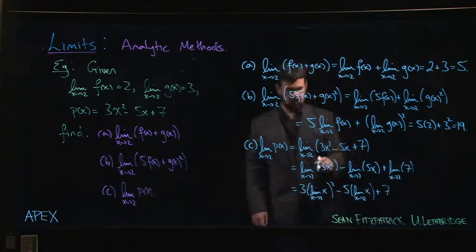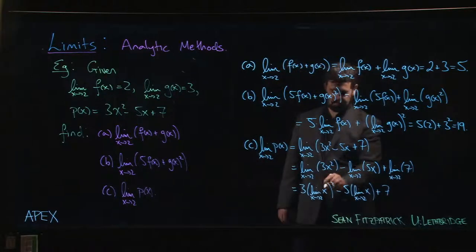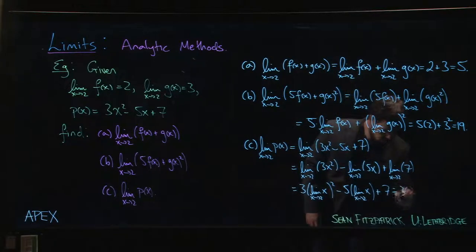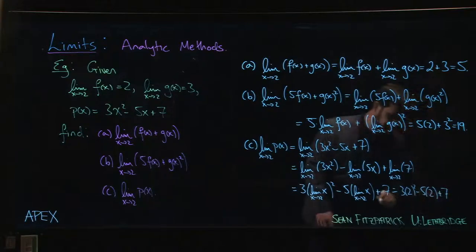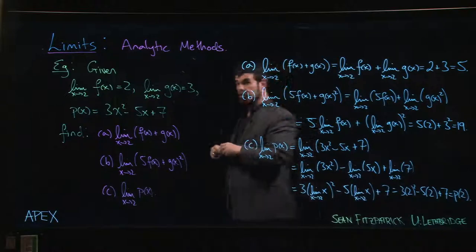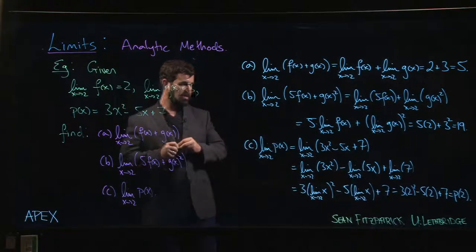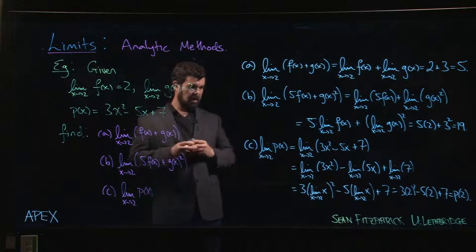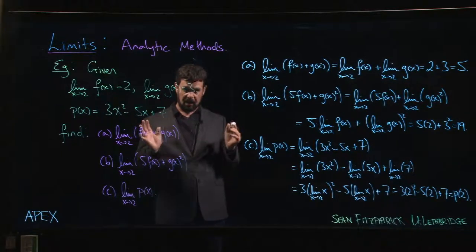Finally, we know that the limit of x as x goes to 2 is just 2, so we have 3 times 2² minus 5 times 2 plus 7. One of the things that you'll notice is that this is simply p(2). With a bit of work, you can take the argument that we just used here to evaluate this particular polynomial at 2 and generalize this.